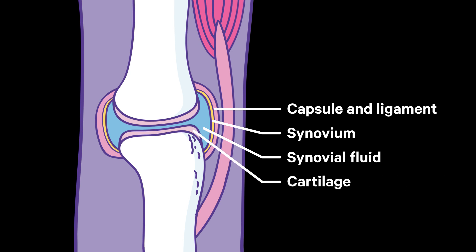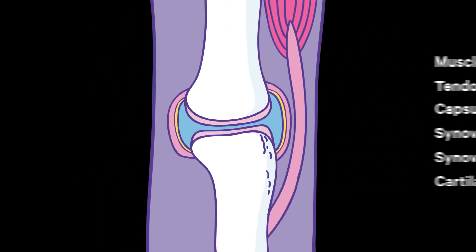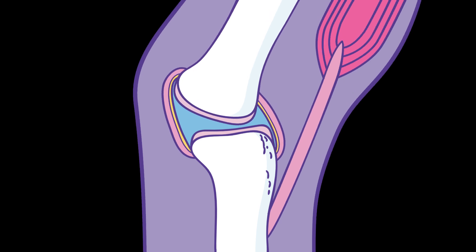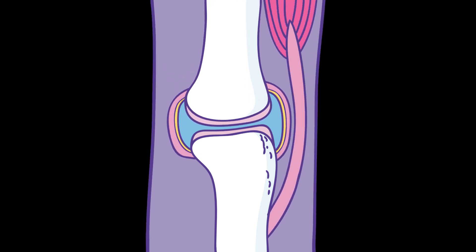Thin layers of tough, slippery tissue called cartilage act as a protective cushion to stop bones rubbing against each other. Muscles are attached to tendons, and tendons are attached to bones. Our muscles pull our tendons, which in turn pull our bones. Osteoarthritis starts when cartilage begins to thin or roughen.